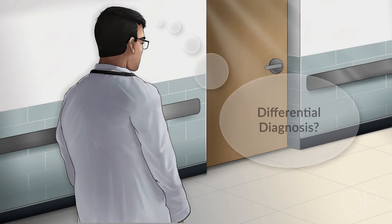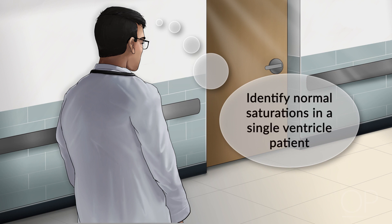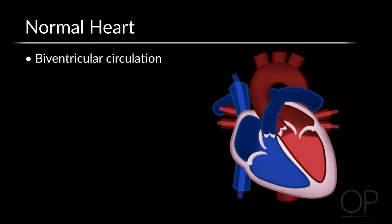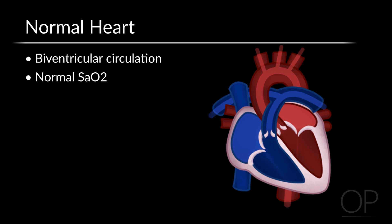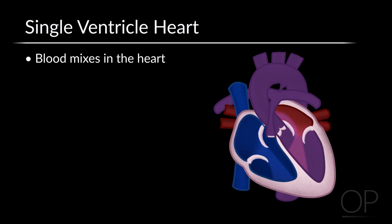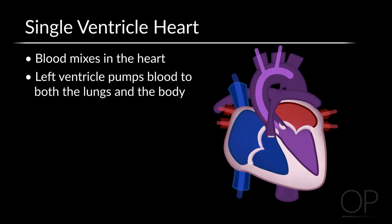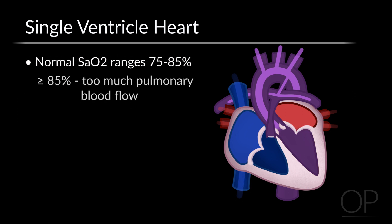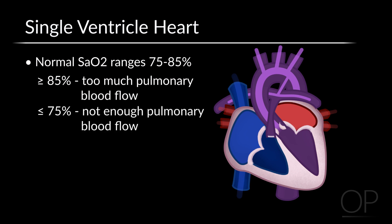As you walk to the room, you should generate a differential diagnosis. First, identify normal saturations in a single ventricle patient in order to identify deviation from normal. In a normal biventricular circulation, pulmonary blood flow and systemic blood flow travel in series, and saturations are typically normal. However, this patient has a single ventricle with complete mixing of blood in the heart and a single pump sending blood to both the lungs and body. Normal saturations should range 75 to 85%. Higher saturations indicate too much pulmonary blood flow, and lower saturation suggests not enough pulmonary blood flow or ineffective pulmonary blood flow.